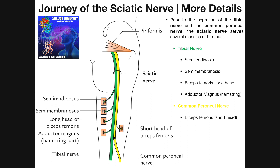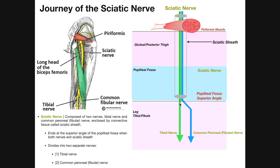At the bifurcation point, approximately at the popliteal fossa, the two component parts separate into the tibial nerve and the common peroneal or common fibular nerve. These two nerves are what we see in the leg. Both will divide further, but focusing on the sciatic nerve here: they travel down the leg adjacent to the tibia and fibula, serving structures in the leg and ultimately the foot.